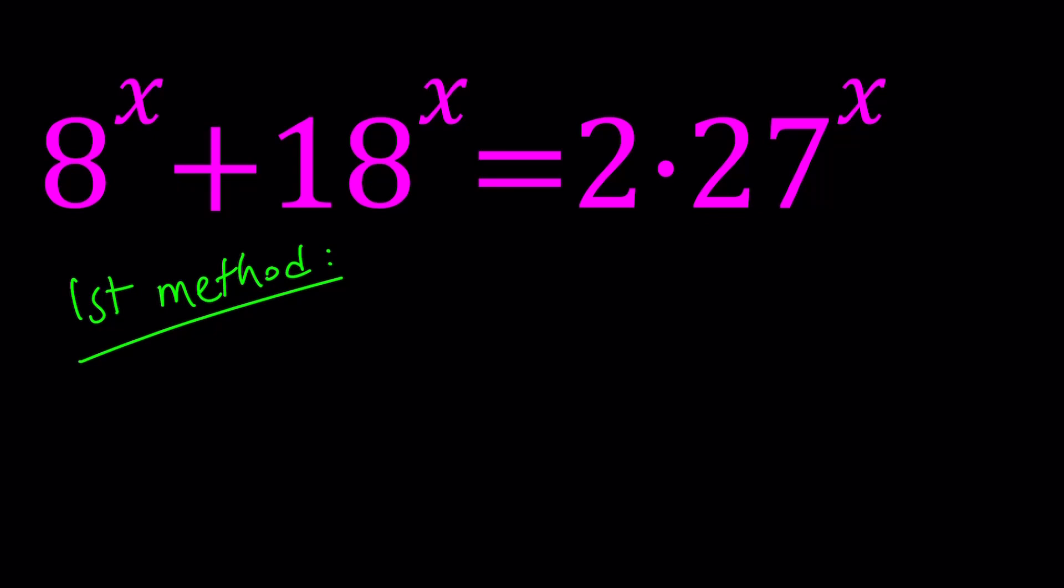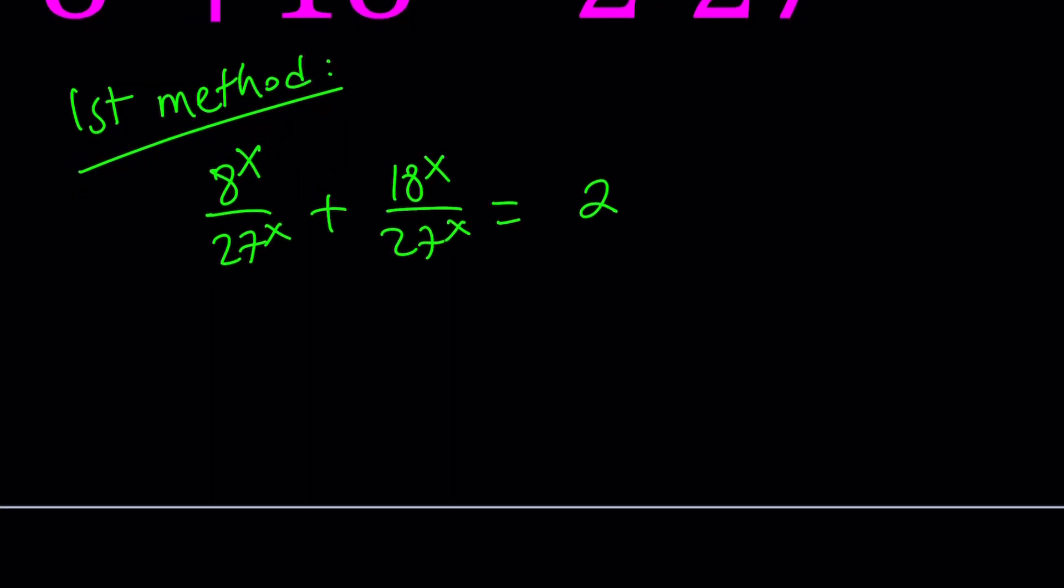It almost always works. So it's going to look like this when we do. And then we're going to go ahead and take the x out. Since we are dividing two powers with the same exponent, we can go ahead and just divide the bases and use the common exponent.